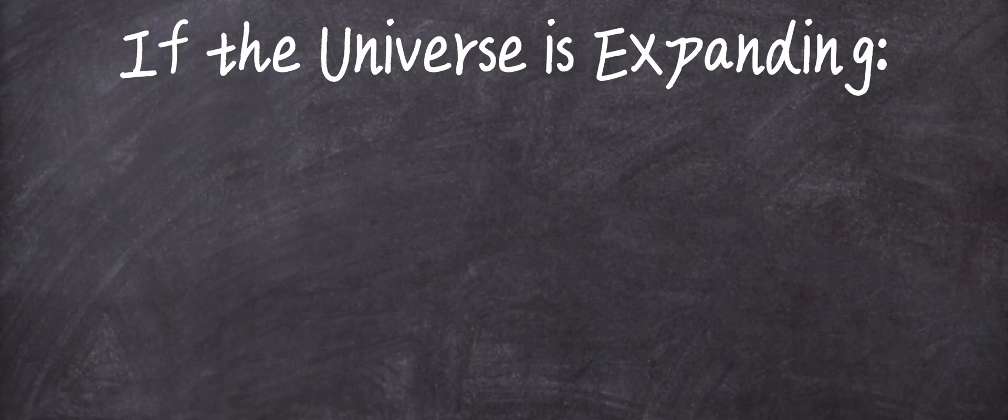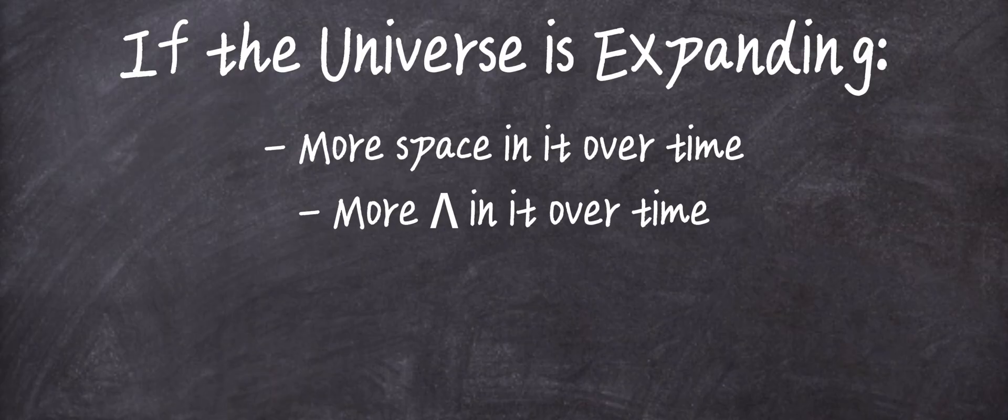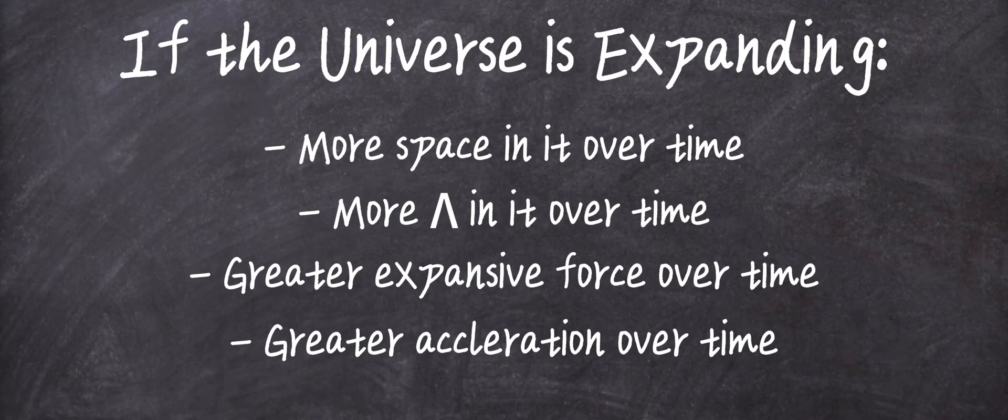If the universe is expanding, which it is, there must be more space in it as time goes on. And if there's more space in the universe, there must be more cosmological constant, because it is an inherent property of space. The cosmological constant creates an expansive force. The fact that more of it exists over time must imply that a greater expansive force is being applied. The old mantra of F equals MA tells us that this increased force leads to an acceleration, which is exactly what we see the universe doing.